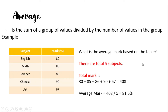Average is defined as the sum of a group of values divided by the number of values in the group. For example, to find the average mark from a table of five subjects: sum all marks to get 408, then divide by five. The average mark is 408 divided by 5, which equals 81.6 percent.